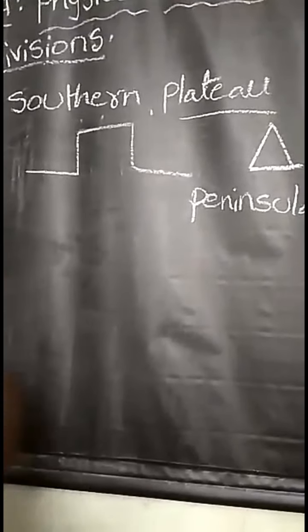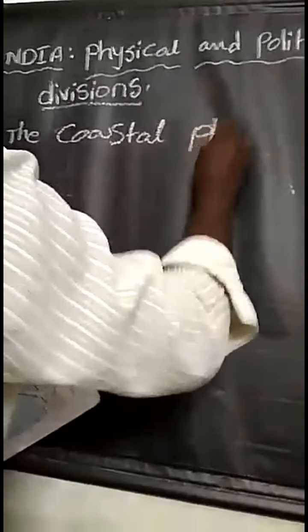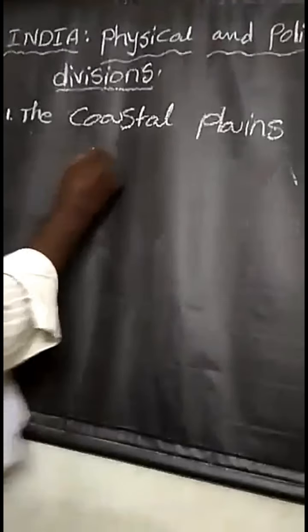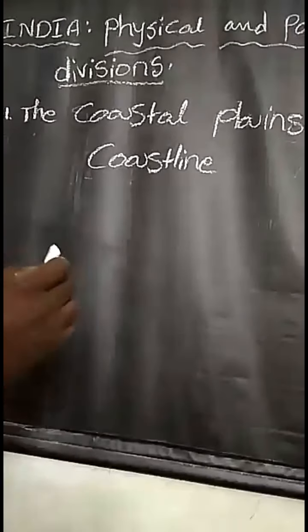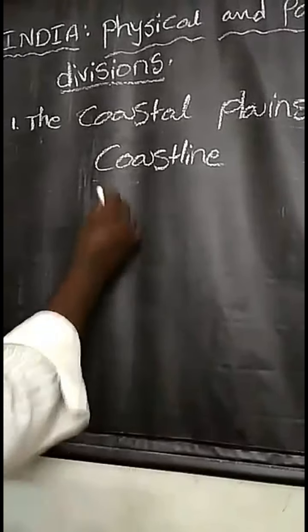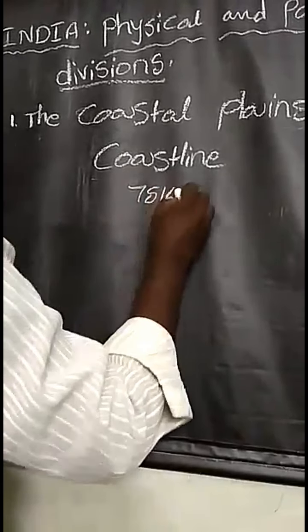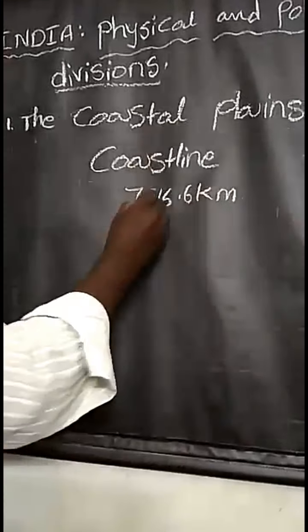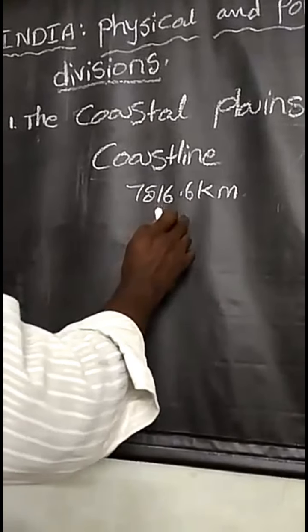Now going to discuss the coastal plains. India has a long coastline. The total length of the coastline of the mainland, Lakshadweep Islands, and Andaman & Nicobar Islands combined - the coastline of the mainland is 7,516.6 kilometers.